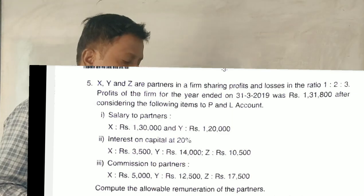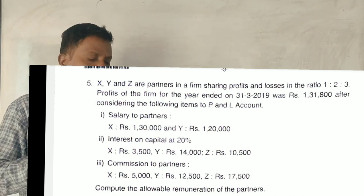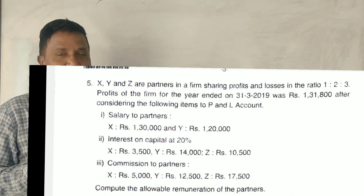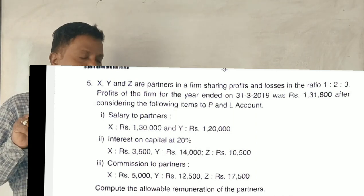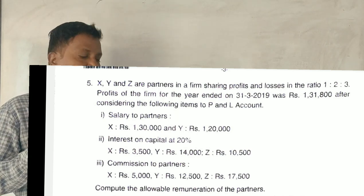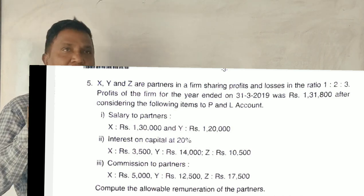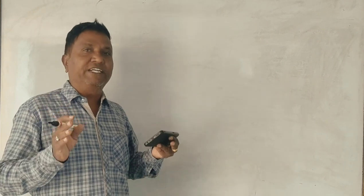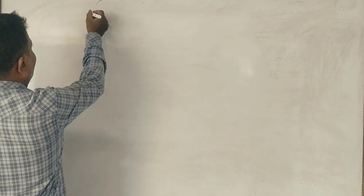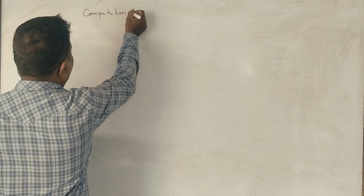In this case, we have a question about allowable remuneration. See, allowable remuneration - that profit is already minus. Interest on capital in excess of 20% is disallowed, 8% is disallowed. Commission to partners is disallowed. So first, book profit, that is allowable remuneration. First, computation of book profit.